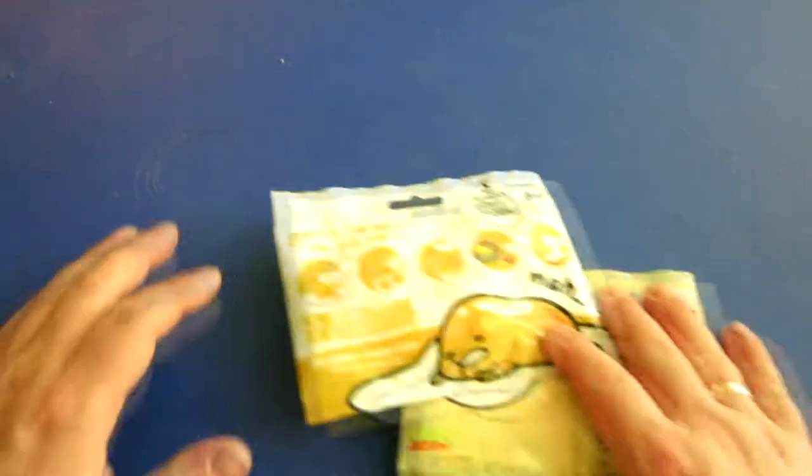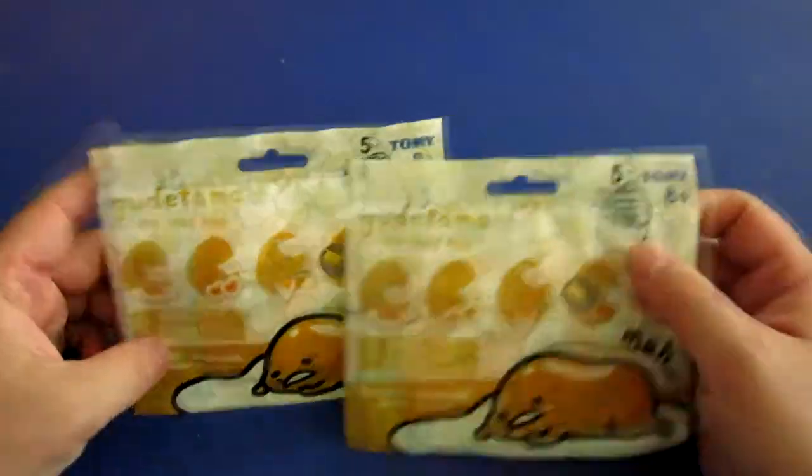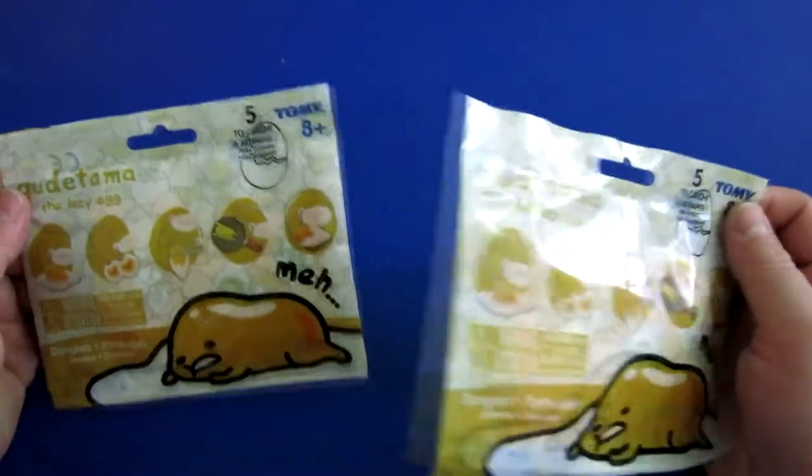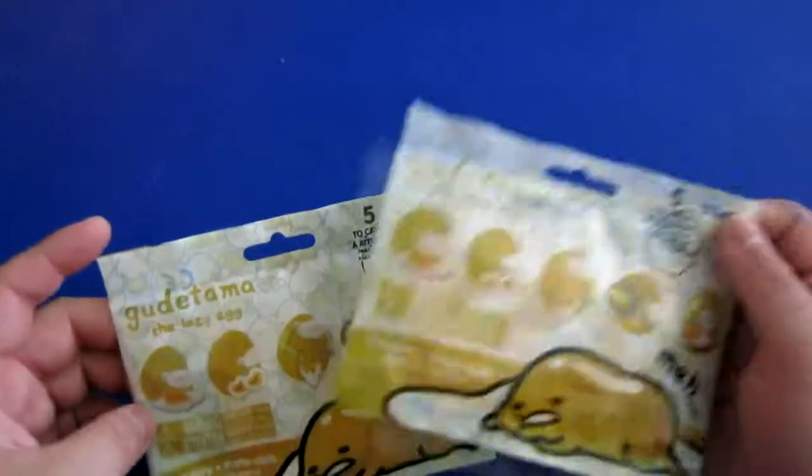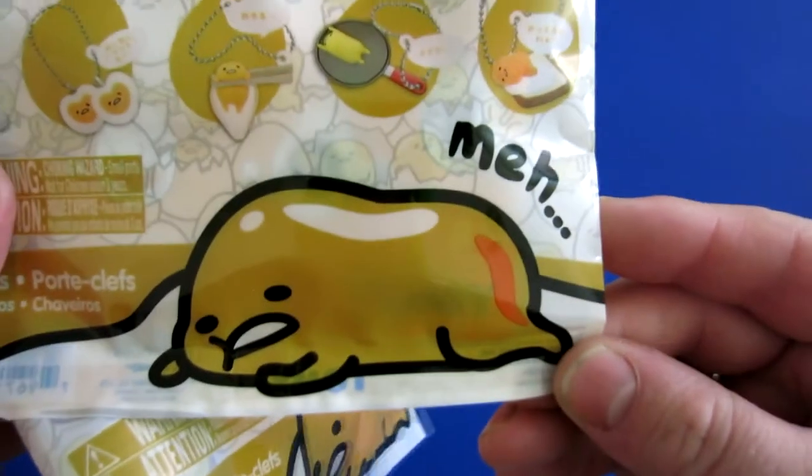Hi there everybody, Jason back again with another random unboxing video. So I came across these things at the store that I work at and they look weird. They're little random bags for a selection of what looks like five different toys. They're called Gudetama, the lazy egg. And I just love this. Meh.